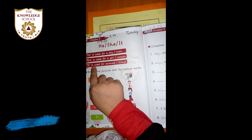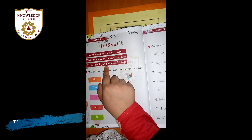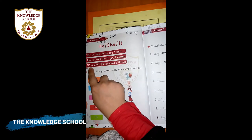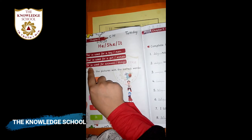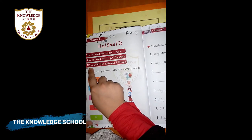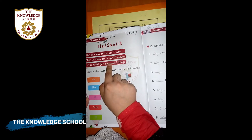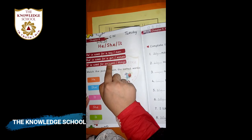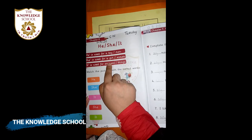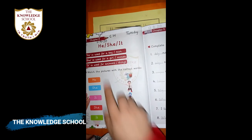It is used for animals or things. It ہم کس کے لیے use کرتے ہیں — animals کے لیے، جب ہم کسی animal کے بارے میں بات کر رہے ہوں، جیسے lion, elephant, giraffe — ان کے لیے ہم it use کرتے ہیں۔